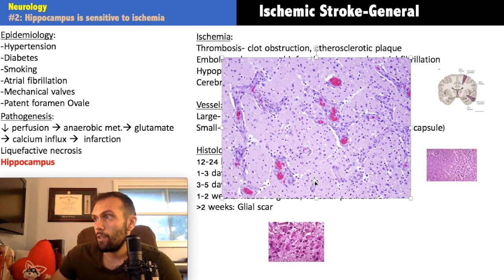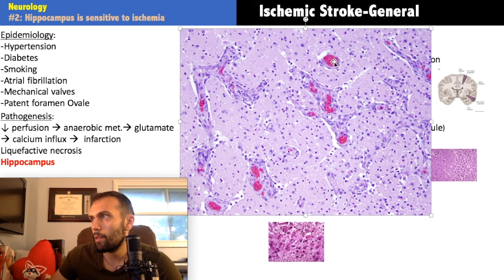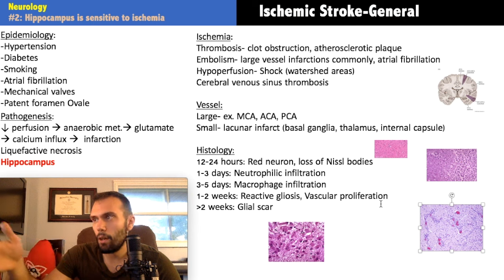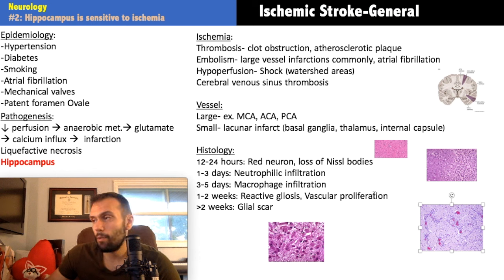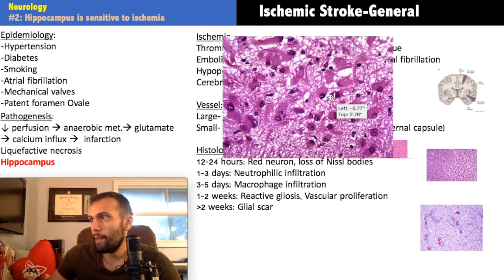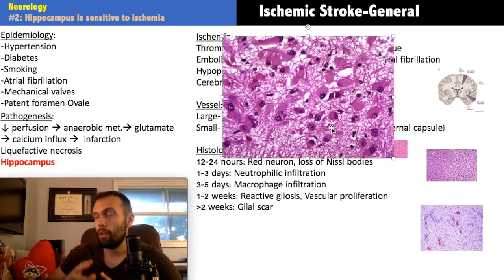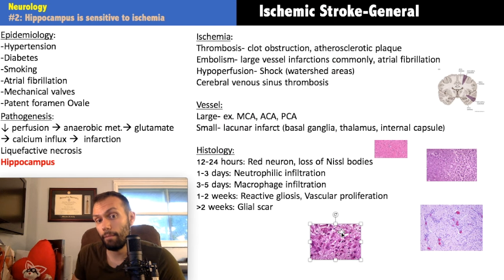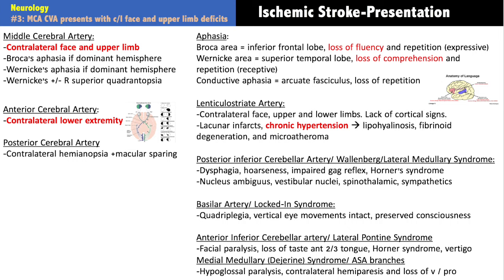Weeks one to two: vascular proliferation occurs — new blood vessels form. On contrast-enhanced MRI after one to two weeks, infarcted areas light up due to this vascular proliferation. Reactive gliosis from astrocytes follows — you can see a reticular mesh-like network forming. This eventually becomes a glial scar and helps reform the blood-brain barrier. However, the destroyed nerve tissue will not regenerate.